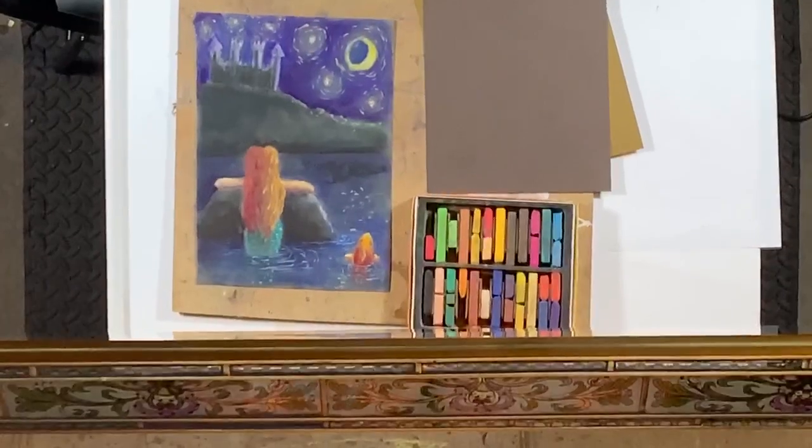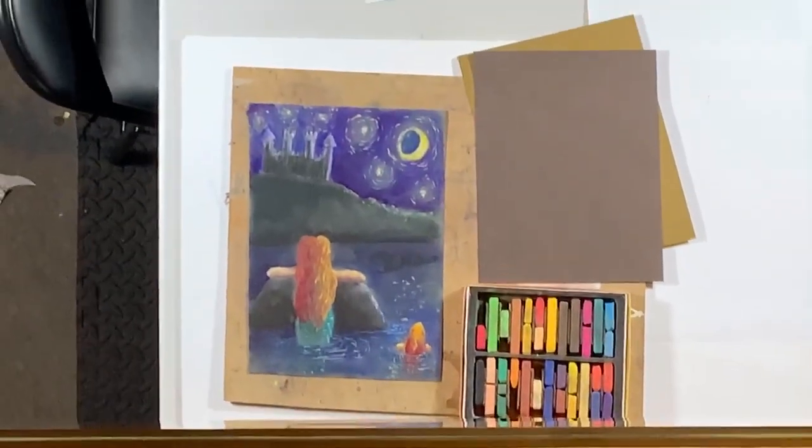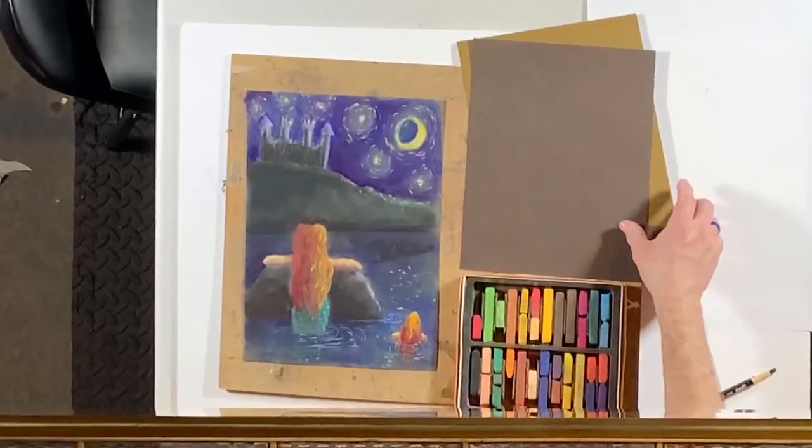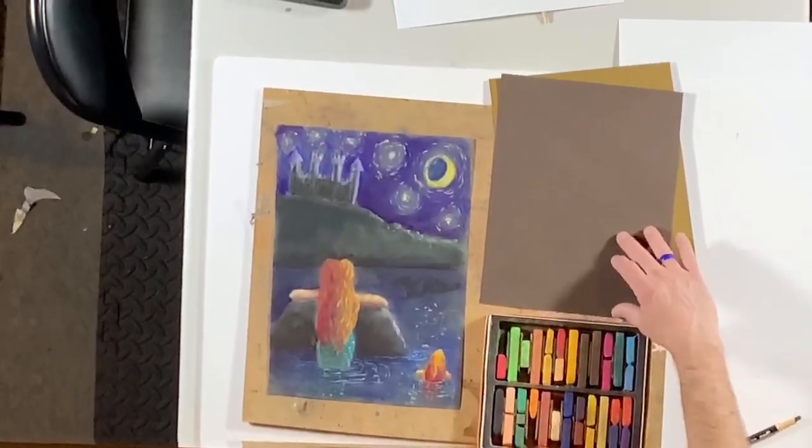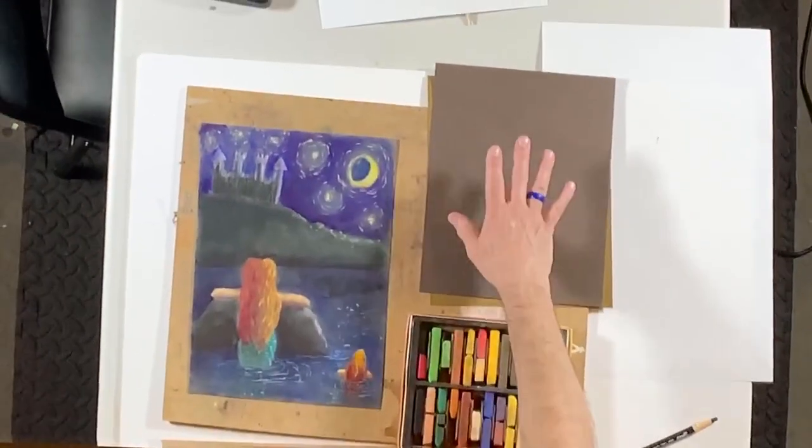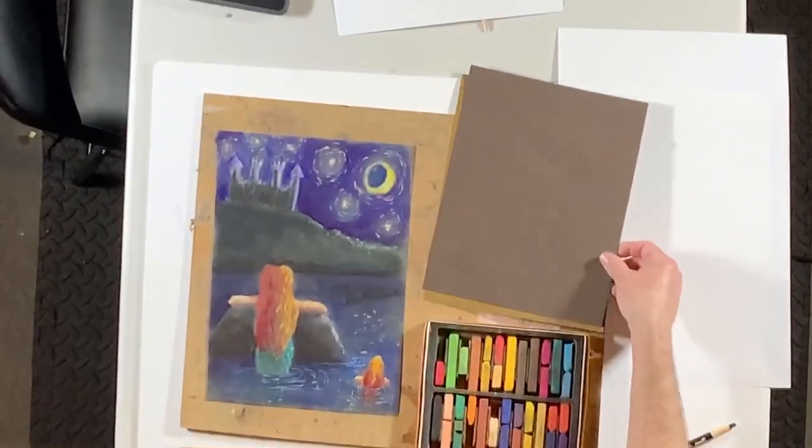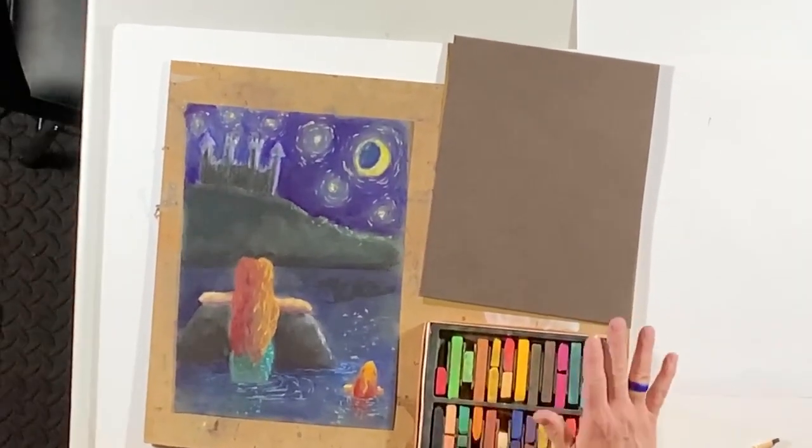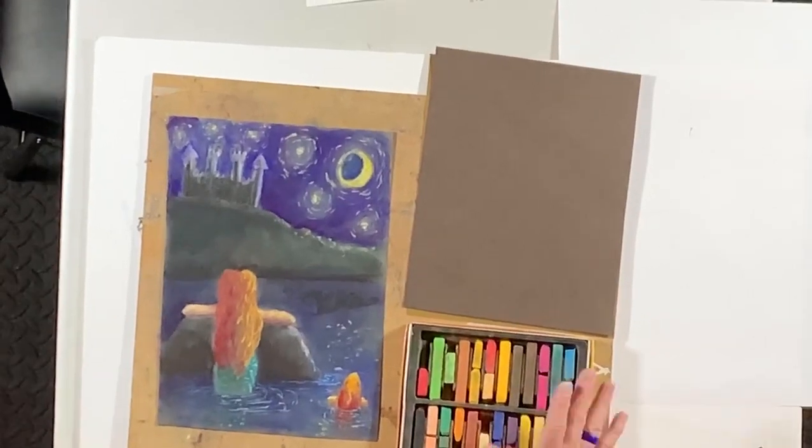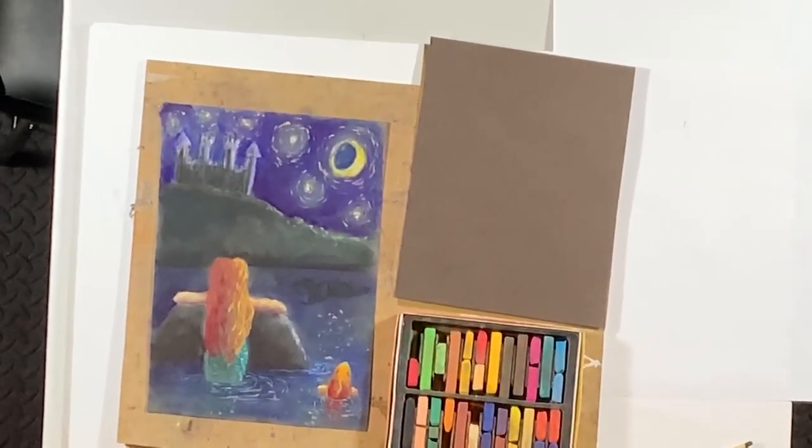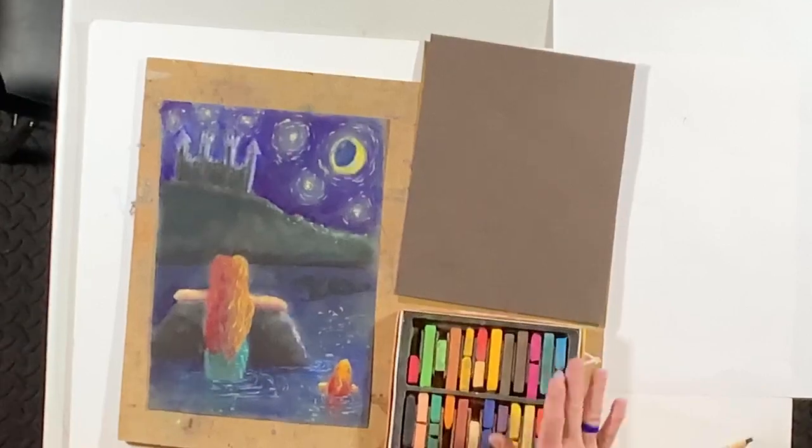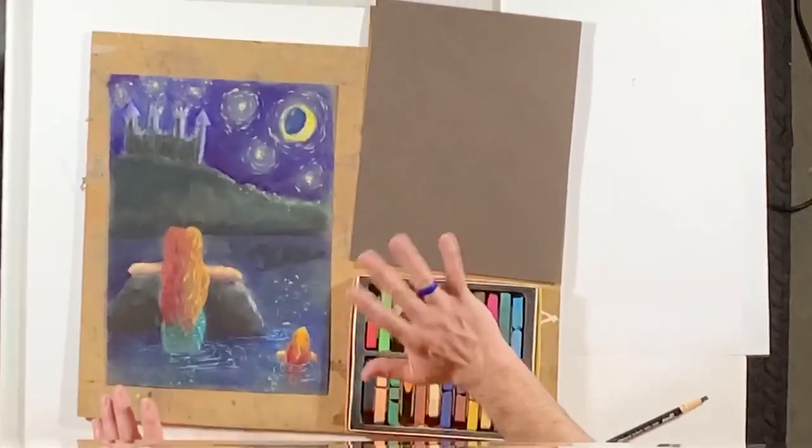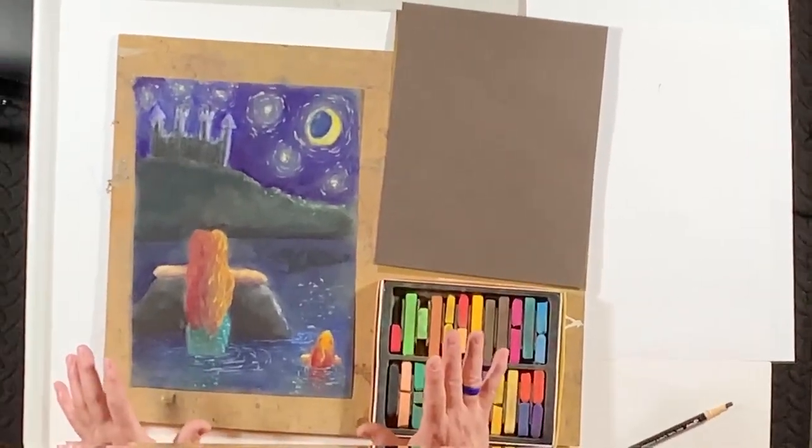So what I recommend as far as medium goes for this project, if you have it, and I know supplies can be a little limited these days, is some dark paper. So really any dark paper would be good and pastels if you have them. Do not worry if you don't. I'm going to do a simple line drawing with you and that will be perfect. But I think you can see that we're doing a night sky with this mermaid and her friend looking up at a castle.